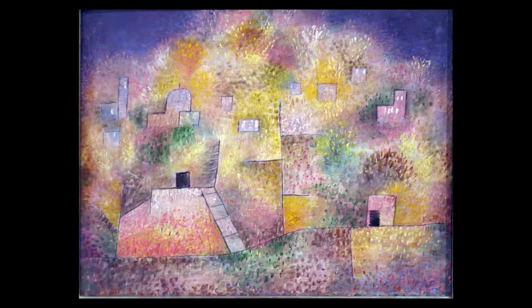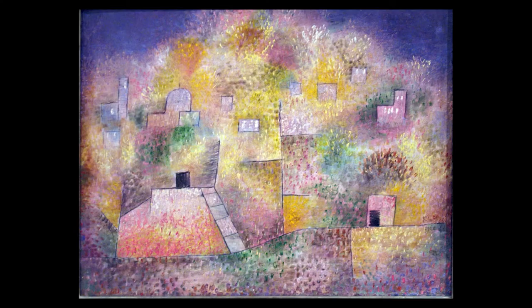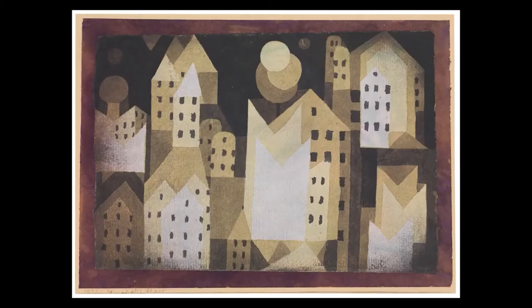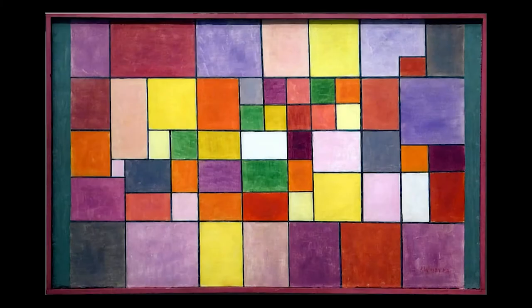Here are some pictures that Paul Klee painted, and here's what I want you to notice about all of these pictures. Notice that they are all built out of basic, simple, geometric shapes. What shapes do you see? Squares? Triangles? Rectangles? Maybe some circles?